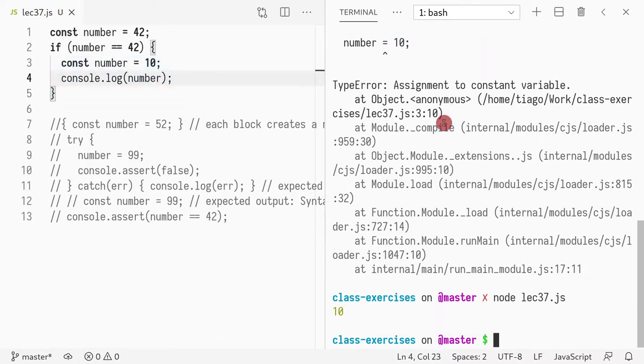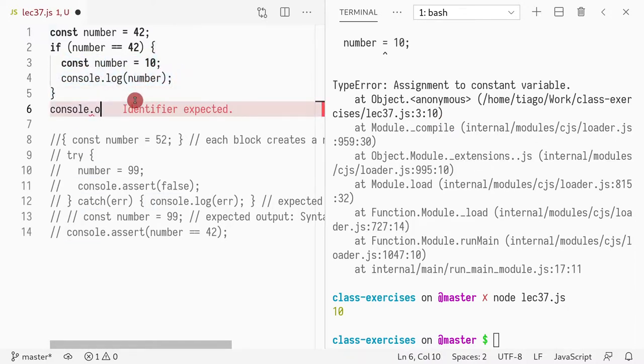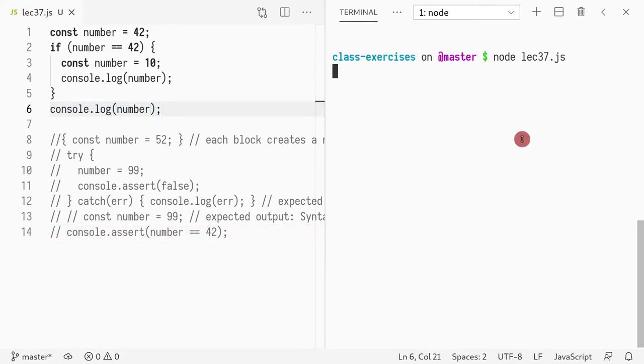So if I run this, I should see 10, because it's defined in the scope. And if I print the value outside, I should see 42. And I see. So it's scoped exactly like a let.